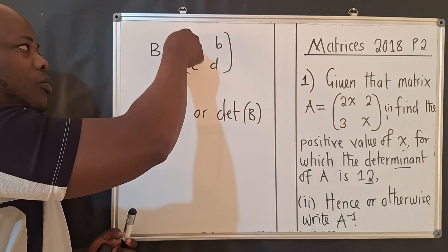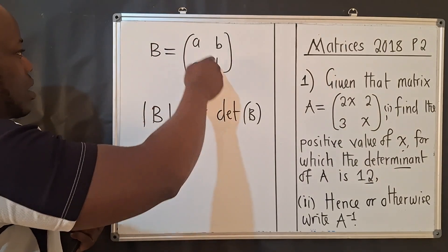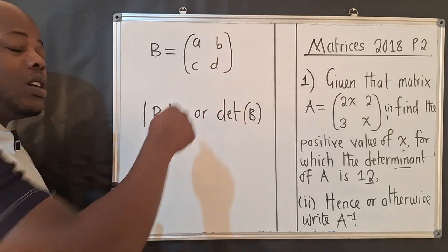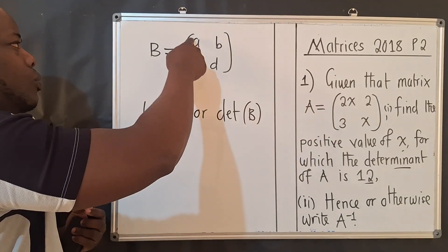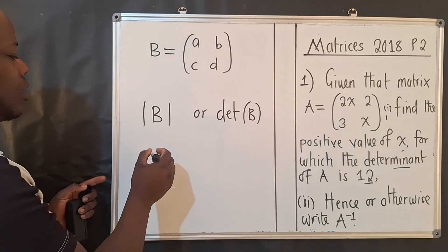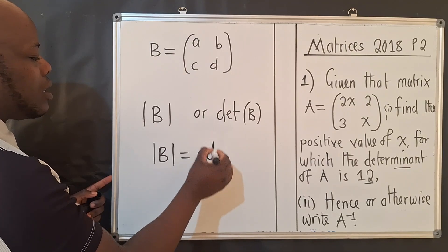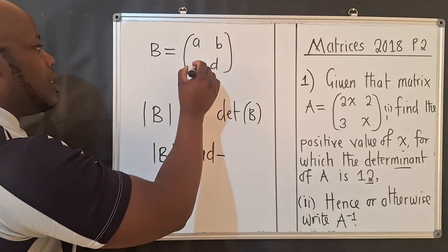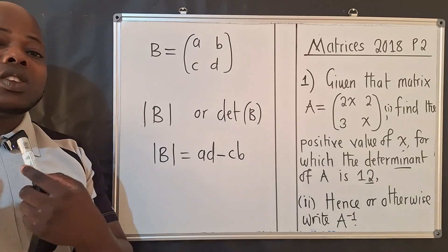When we talk about the determinant, it means multiply the major diagonal — going from top-left to bottom-right — and subtract the product of the minor diagonal. So the determinant of B equals a·d minus b·c. That is how you find the determinant.